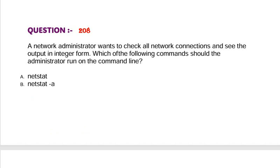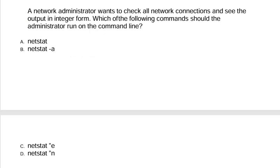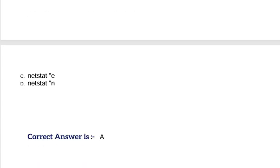Question: A network administrator wants to check all network connections and see the output in integer form. Which of the following commands should the administrator run on the command line? Option A, netstat. Option B, netstat -a. Option C, netstat -e. Option D, netstat -n. Correct answer is Option A.